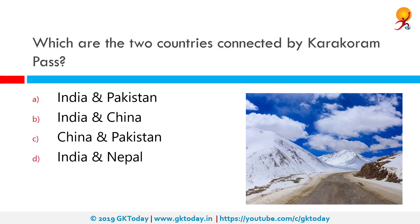Which are the two countries connected by Karakoram Pass? The correct answer is India and China. The Karakoram Pass is a mountain pass between India and China in the Karakoram range. It is the highest pass on the ancient caravan route between Leh in Ladakh and Yarkand in the Tarim Basin. Karakoram literally means 'Black Gravel' in Turkish.